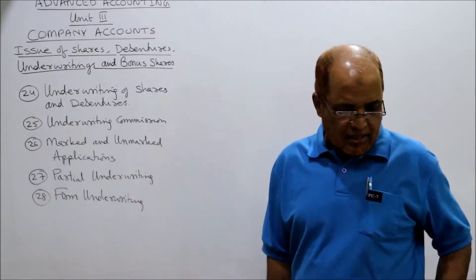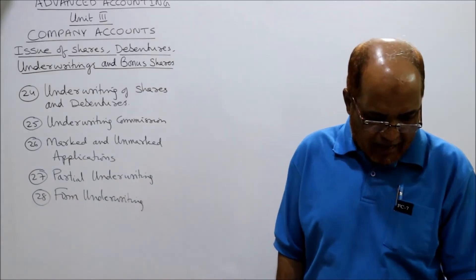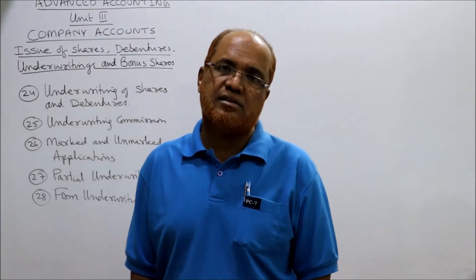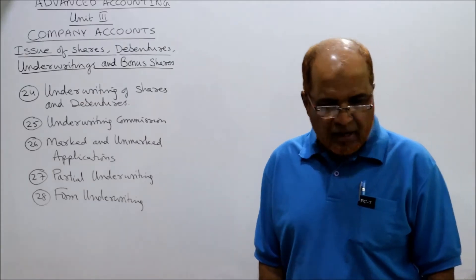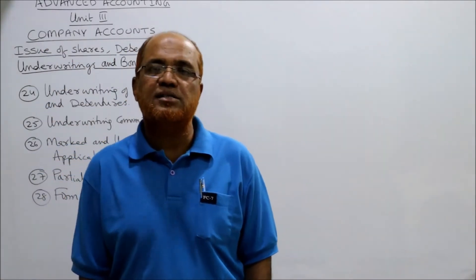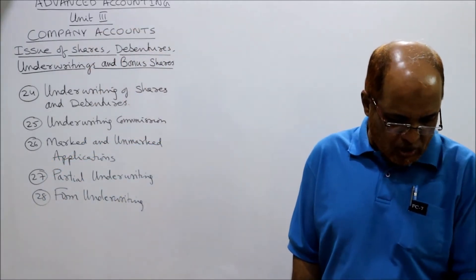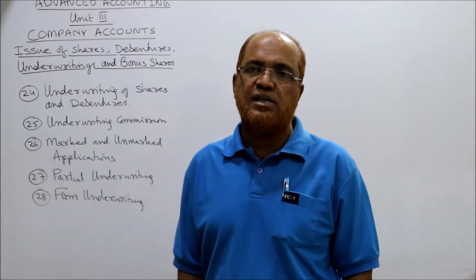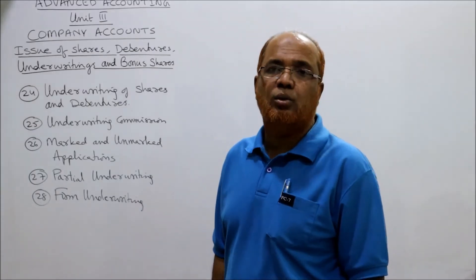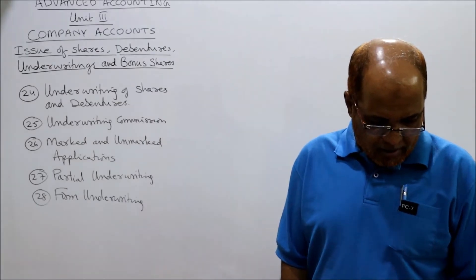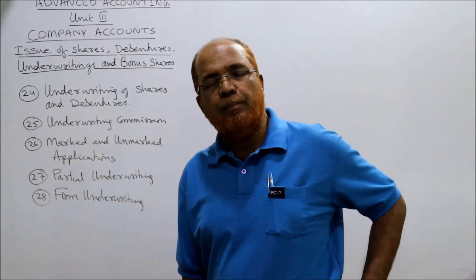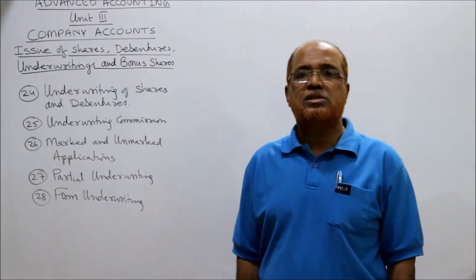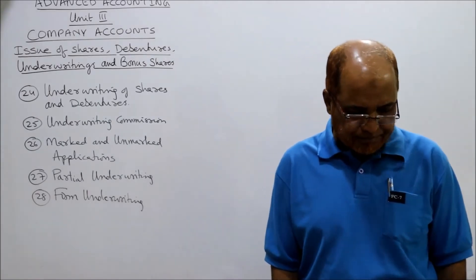Fourth: the number of shares or debentures which underwriters have agreed to subscribe — absolutely or conditionally — should be disclosed in the prospectus. Fifth: a copy of the underwriting agreement should be submitted to the Registrar of Companies. Sixth: no underwriting commission is payable on shares taken up by promoters, employees, directors, or other such parties. Commission is payable only on shares offered to the general public.